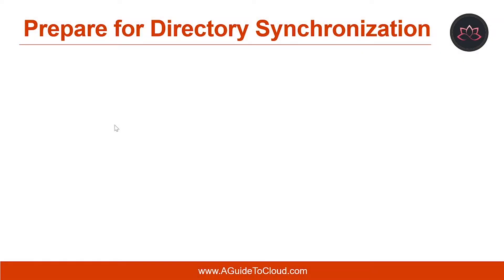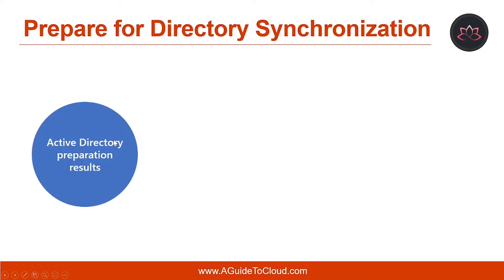Let's understand how to prepare for directory synchronization. Before you deploy Azure AD Connect to synchronize your on-premises Active Directory objects to Azure AD, you need to prepare your environment by analyzing Azure AD. Consider activating directory synchronization as a long-term commitment. After you have activated directory synchronization, you can only edit synchronized objects by using your on-premises Active Directory management tools. To help a seamless transition to Microsoft 365, you should prepare your Active Directory forest before you begin your Microsoft 365 directory synchronization deployment.